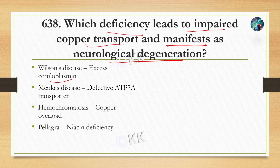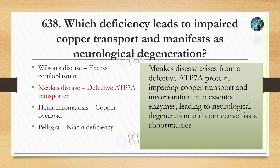The next question: which condition is caused by a defective ATP7A transporter? Option A: ceruloplasmin deficiency. Option B: Menkes disease, defective ATP7A transporter. Option C: hemochromatosis, copper overload. Option D: pellagra, niacin deficiency. The correct answer is option B: Menkes disease, defective ATP7A transporter. Menkes disease arises from a defective ATP7 protein, impairing copper transport and incorporation into essential enzymes, leading to neurological degeneration and connective tissue abnormalities.